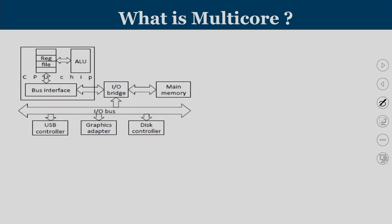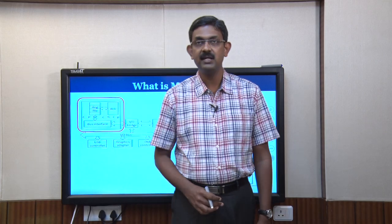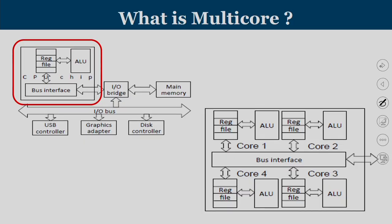What do we mean by multicore? In a general computer, a core consists of the control unit, registers, and functional units like ALU and floating-point units. Main memory, hard disk, and peripheral controllers are outside the core. In a multicore design, the core is multiplied — a 4-core design has cores 1, 2, 3, and 4, each with its own set of registers, functional units, and control unit.